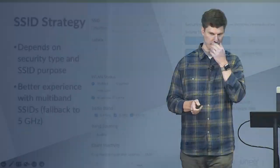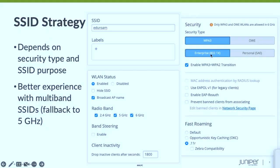We've been using transition mode, especially with WPA3 Enterprise. With MIST, you can have a single WLAN across all three bands with transition mode, and we do some things behind the scenes to only do transition in the 2.4 and 5, and in 6 GHz you do full WPA3.